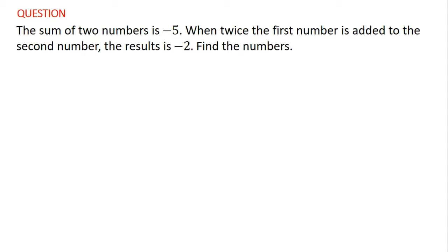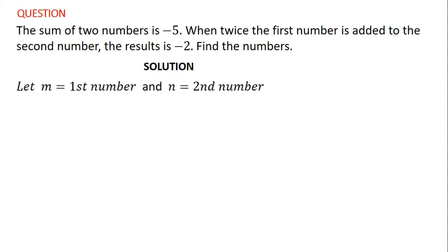Once again, we are being told to find two numbers. These are the unknowns and because they are unknowns, we are going to represent them by variables. So I will say that let m equal to the first number and n equal to the second number.